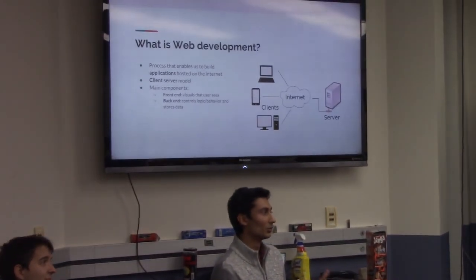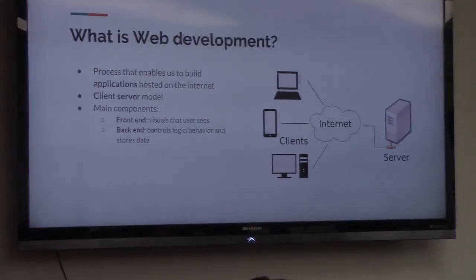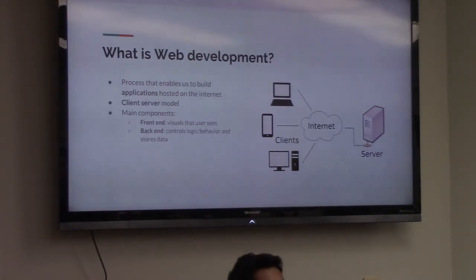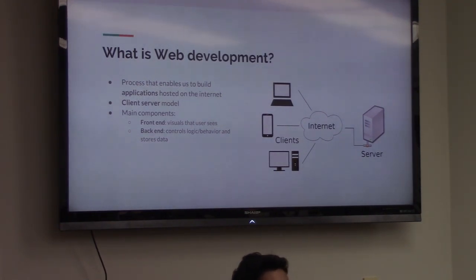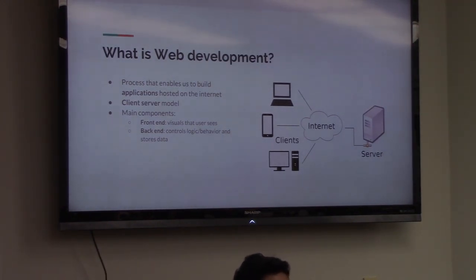The way this works is mainly through something called a client-server model. This is a way of splitting the whole structure into two main halves. If you look at something like Instagram, you have the mobile app with all the buttons and pictures you see. And there's all the hidden stuff that happens in the background, like logging in, storing pictures, or following people. Those are the two main parts: the client, which is the front end that you see, and the back end, which is all the hidden stuff.